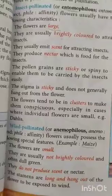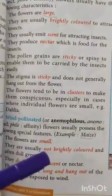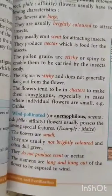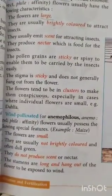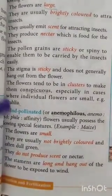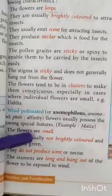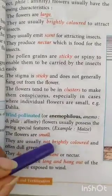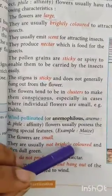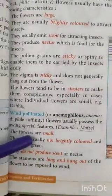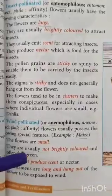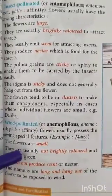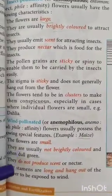Flowers of wind-pollinated plants are small and not brightly colored — usually they are green in color. They do not produce any nectar or any scent, because they don't need to attract any insects.